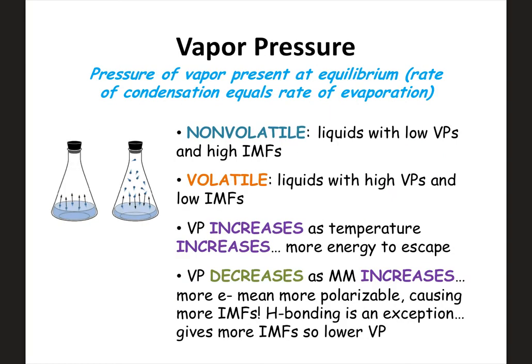Vapor pressure is going to be the pressure of vapor present in a container when you're at equilibrium. Basically, the rate of molecules entering the gas phase is equal to the rate of molecules leaving the gas phase and going back to the liquid phase. Once that equilibrium is established, the vapor pressure would be the pressure of the gas in the sealed container. If you have something that's non-volatile, that would be a liquid with a low vapor pressure — the liquid is not entering the gas phase as much, so you would expect lower vapor pressure and stronger or higher amounts of IMFs. If the IMFs are stronger, they hold molecules in the liquid phase, so fewer enter the gas phase, giving a lower vapor pressure.